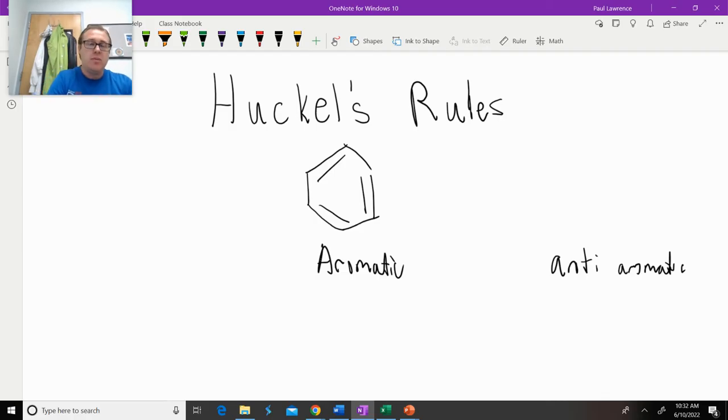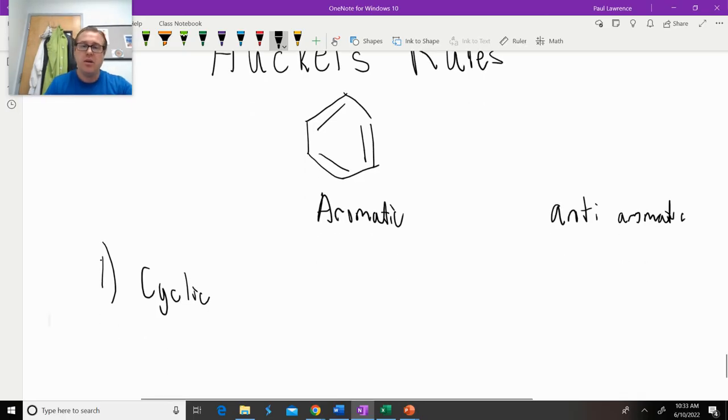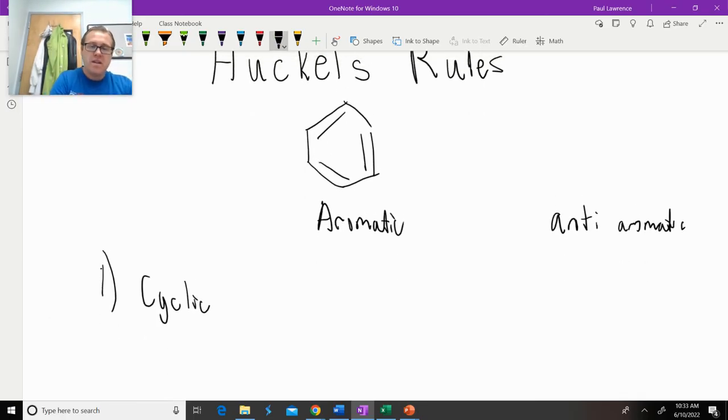So what makes an aromatic compound? There's four rules or criteria that you need to be aware of. The first rule is it needs to be cyclic. When you look at benzene, it's a ring. So benzene is cyclic. Check. The second rule is it has to be planar. It has to be completely flat. And when we look at benzene, every single carbon is sp2 hybridized, so it is planar.